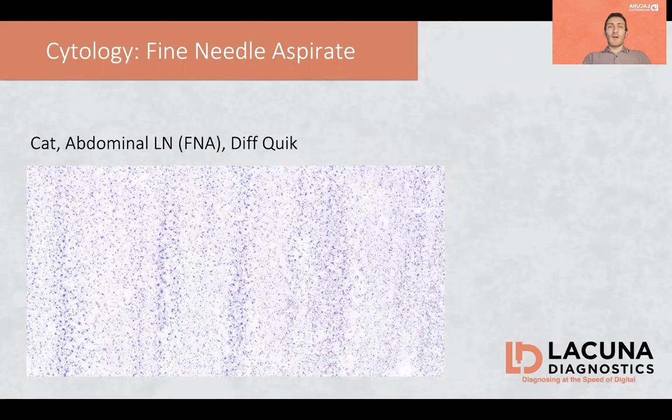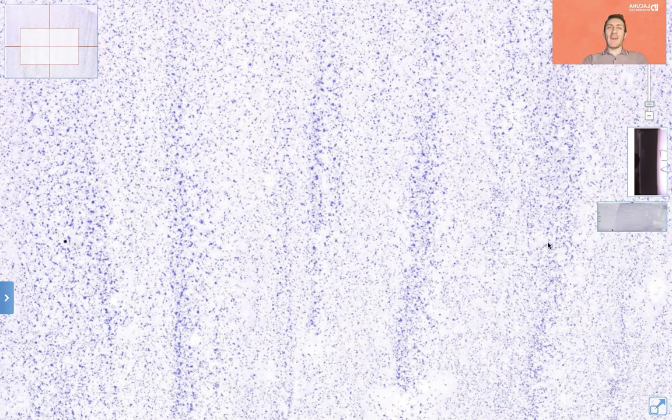I'm going to show you now the most representative cytology smear from the lymph node, which I think is extremely interesting. The first step, as we discussed in the previous case, is looking at the slide at low power and evaluating the cellularity and the preservation, because if these are not adequate, the sample might be non-diagnostic.